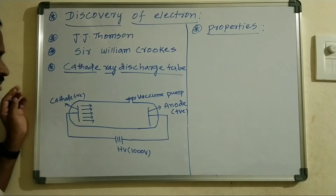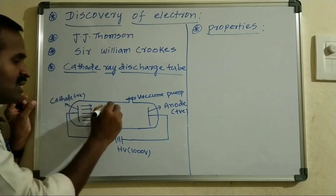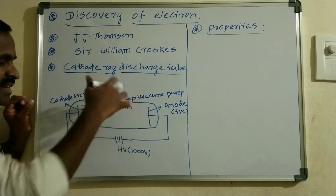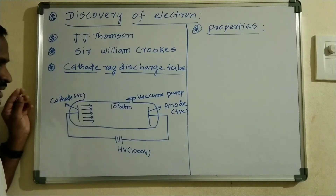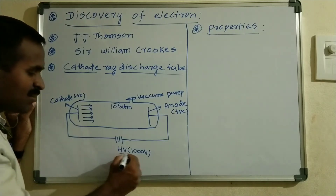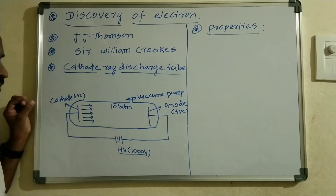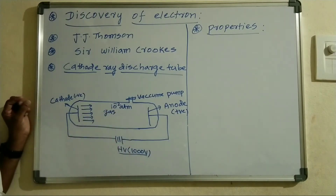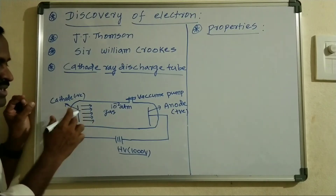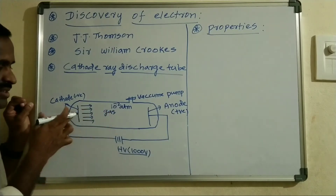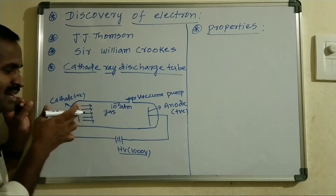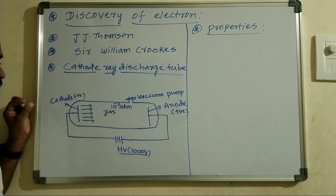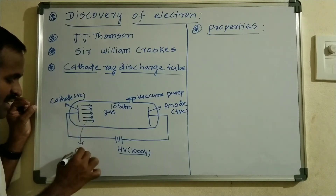In this cathode ray discharge tube experiment, some gas is sent into the discharge tube at very low pressure. Then we apply a high voltage of nearly about 10,000 volts. When we apply the high voltage, the gas in the discharge tube emits light, and current flow takes place from cathode to anode through a stream of particles traveling in a straight line. This stream of particles is called cathode rays.